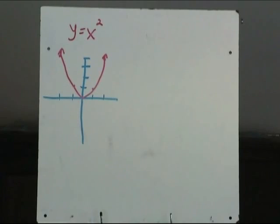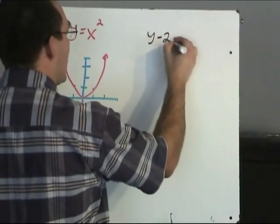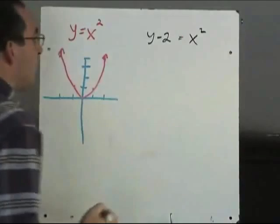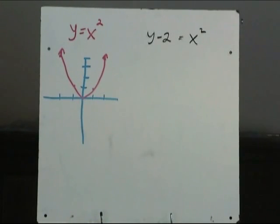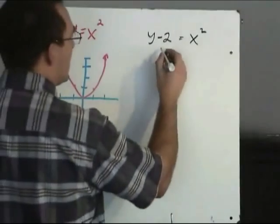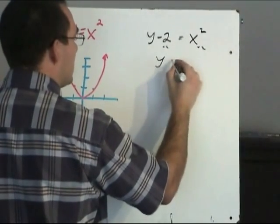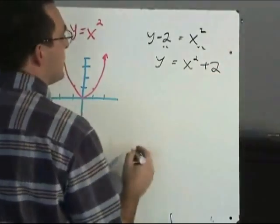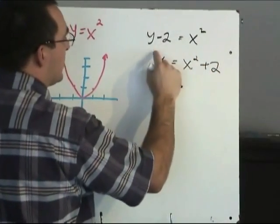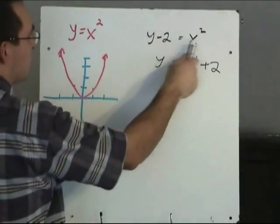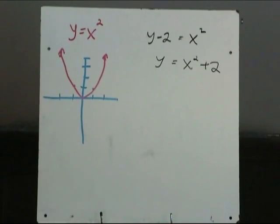We've seen what happens when we replace x with x plus 2 or x minus 2. Now, what would happen to the function if we replaced y with y minus 2? The graph would look like y minus 2 equals x squared. The problem with this in a graphing calculator is that the function must be defined as y equals something. So we add 2 to both sides to get y equals x squared plus 2. These are exactly the same function: y minus 2 equals x squared and y equals x squared plus 2.